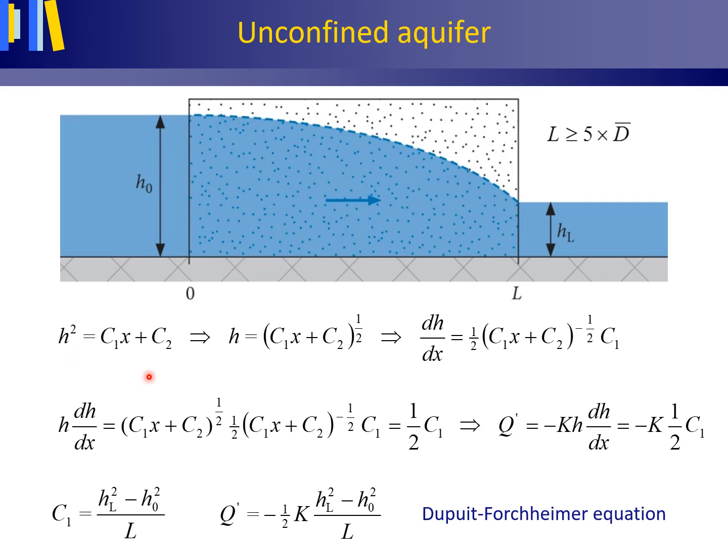From the equation H² equals C1x + C2, we can establish H as the square root of (C1x + C2), which is the same as (C1x + C2)^(1/2). From this, we can determine dH/dx by differentiation using the chain rule.